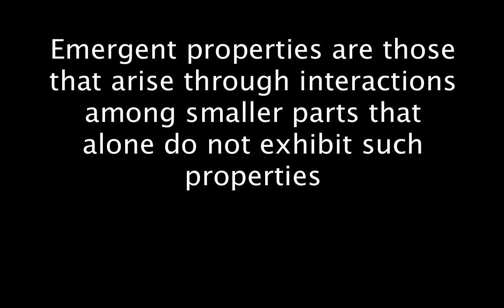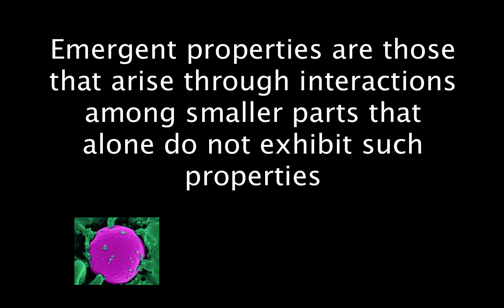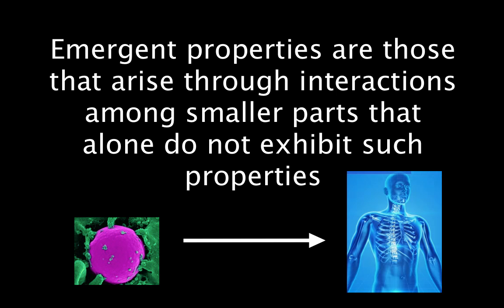Emergent properties are those that arise through interactions among smaller parts that alone do not exhibit such properties. For example, a smaller part might be a cell. The cell does not exhibit the same properties as when many cells are put together to form a multicellular organism.